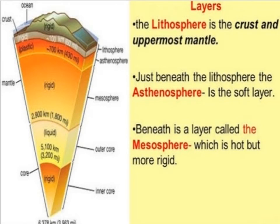As shown in this diagram, the mantle has different sub-layers. The lithosphere is the crust and uppermost mantle. Just beneath the lithosphere is the asthenosphere, which is a soft layer.